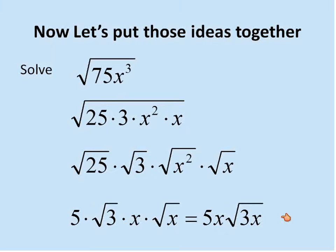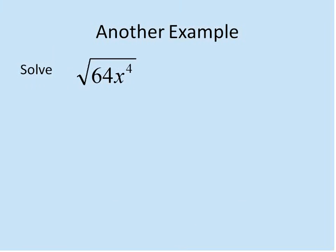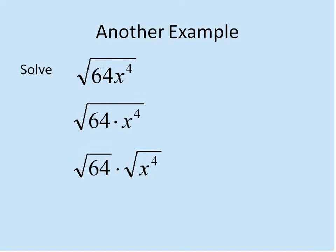This is a challenging process. Let's go through another example a little more quickly: the square root of 64x to the power of 4. 64 is a perfect square, and x to the power of 4 is also a perfect square, so we just separate them and solve. The square root of 64 is 8, and the square root of x to the power of 4 is x squared, giving a final answer of 8x squared. There are no additional factors remaining under the square root symbol, so 64x⁴ is a perfect square.